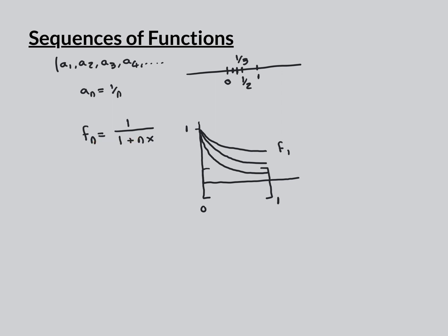For our example, all the functions in the sequence will be over the same domain — the closed interval from 0 to 1. The functions are f_n = 1 over (1 + nx). For f1, you put in n=1 and get 1 over (1+x). At x=0 you get 1 over 1, so it's mapped onto 1. At x=1 you get 1 over 2, so it goes down to a half — a hyperbola in between.